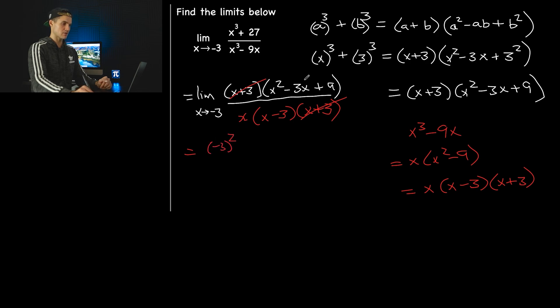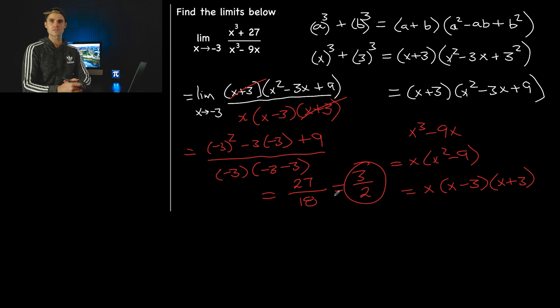Now we can plug in negative 3 for the rest of the x values. We'll have negative 3 squared in this bracket, minus 3 times negative 3 plus 9, all over negative 3, and then this will be negative 3 minus 3. This is going to be 27 over, hold up, positive 18. You've got to be careful, negative 6 times negative 3 is positive 18. So the final answer, you can divide both by 9, so 3 over 2. That's the final answer for this limit.